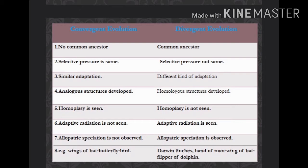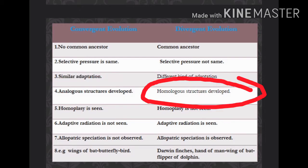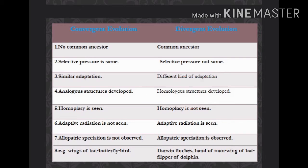The fourth point: in convergent evolution, analogous structures are developed, and in divergent evolution, homologous structures are developed. Fifth point: in convergent evolution, homoplasy is seen.